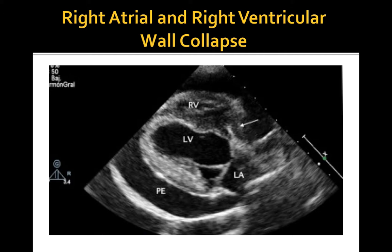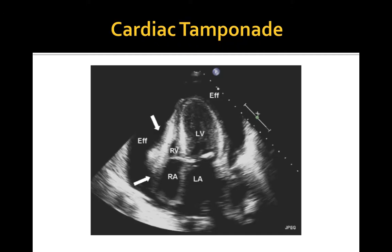This is a left apical four-chamber view. There is a moderate to large amount of pericardial effusion resulting in partial right atrial and right ventricular wall collapse.